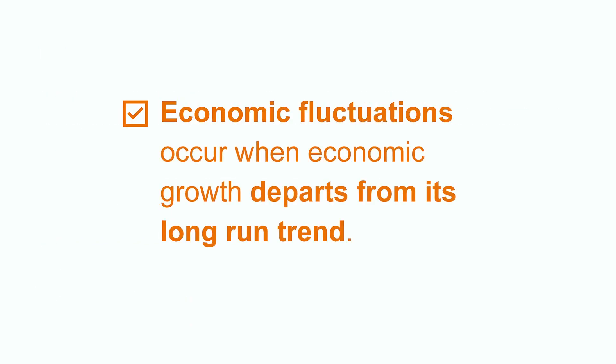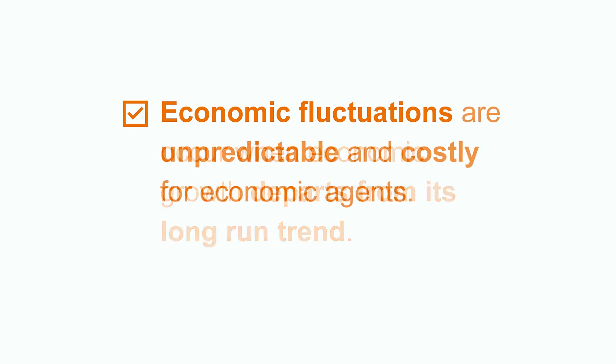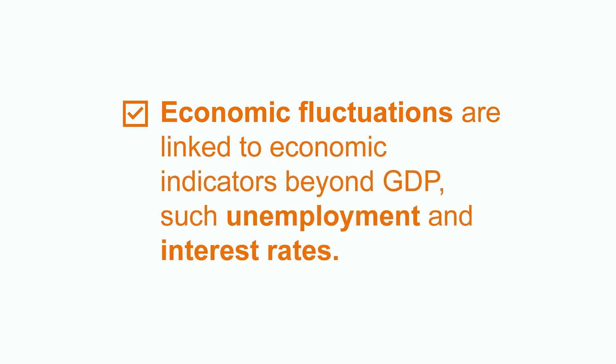Let's recap. When economic growth departs from its long-run trend, we call it economic fluctuations. Economic fluctuations are unpredictable and costly for economic agents like firms, households, and governments. Economic fluctuations are linked to economic indicators beyond GDP, such as unemployment and interest rates. Today, we discussed economic fluctuations, how we see them in the data, and how we can model them in the macroeconomic framework. Thanks for watching. Check out Chegg for more resources on macroeconomics.